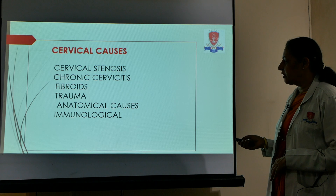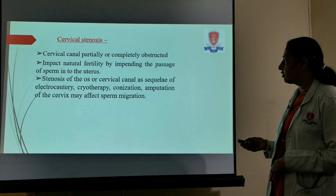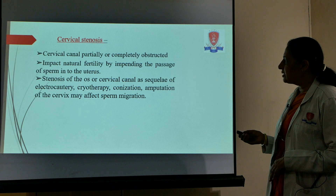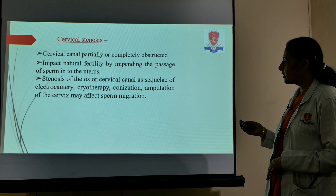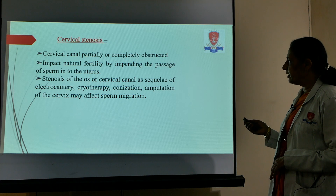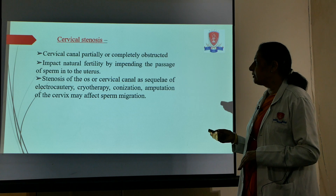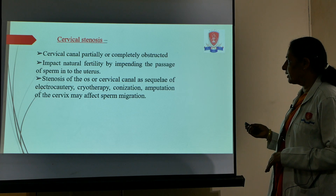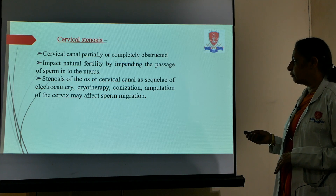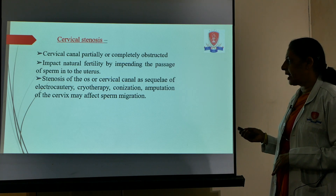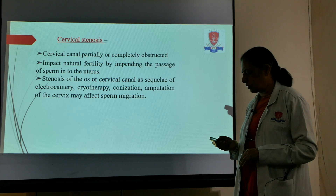Cervical causes include cervical stenosis, chronic cervicitis, fibroids in the cervix, trauma to the cervix, anatomical causes, and immunological causes. Stenosis can be partial or complete obstruction and impacts natural fertility by impeding the passage of sperms into the uterus. Stenosis of the cervical canal can occur as a sequelae of electrocautery, cryotherapy, conization, or amputation of the cervix, and it also affects sperm antigens.